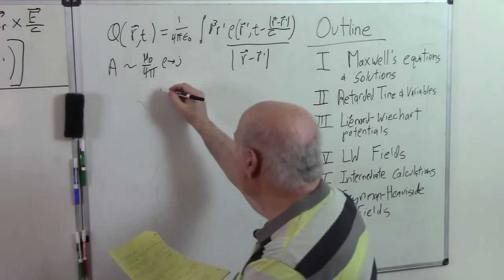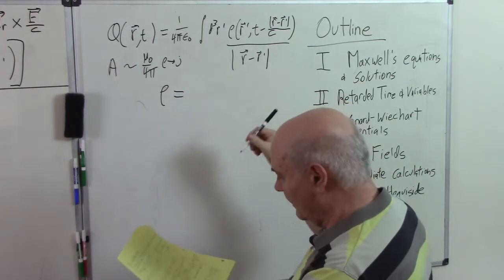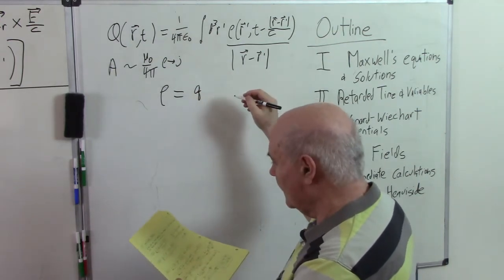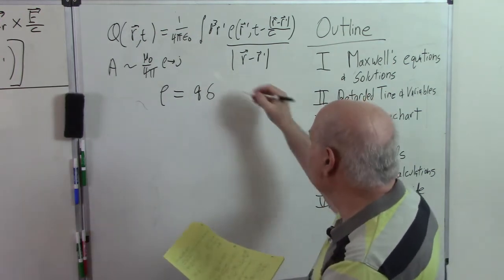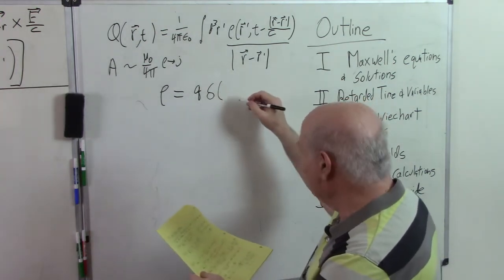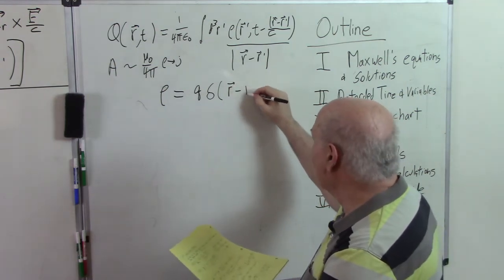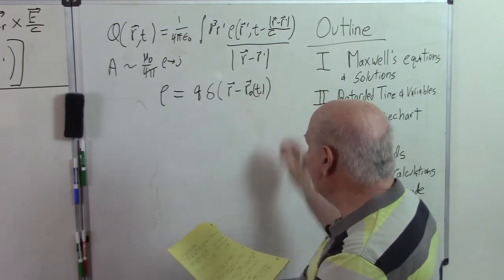The charge density is just a delta function. We have a charge moving along a path. So the charge density is just the charge q times the delta function. This is a three-dimensional delta function but I'm not going to write it. But the arguments are vectors so you know it's a three-dimensional delta function. And r_0 is the path of the particle.